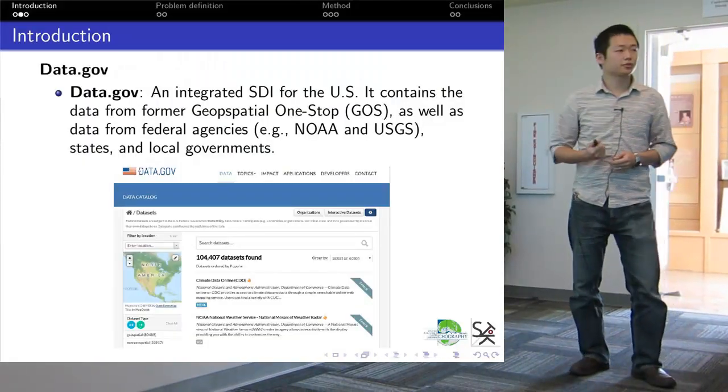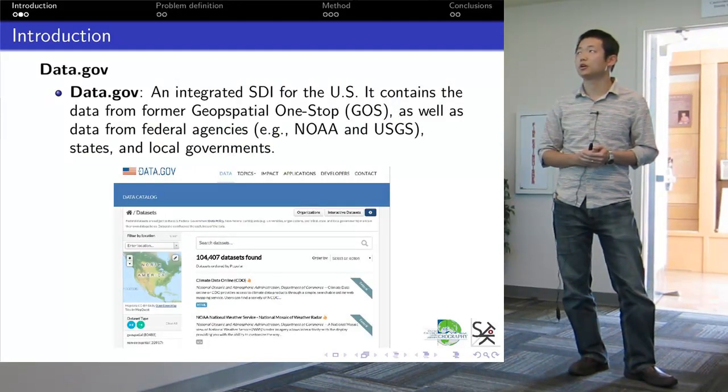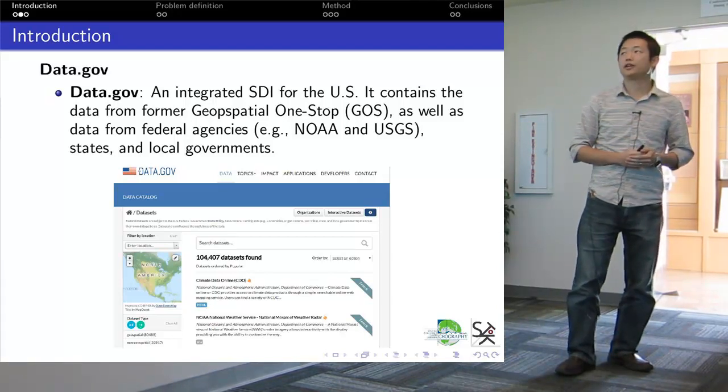There are many examples of SDI. For example, in the U.S., we have Data.gov. It contains data from the previous geospatial one-stop and also has data from other federal agencies.